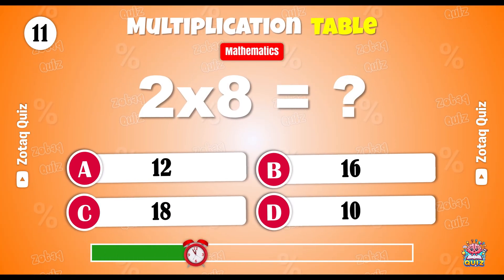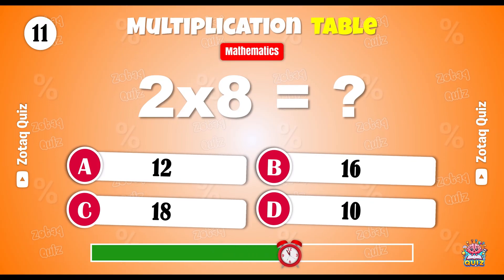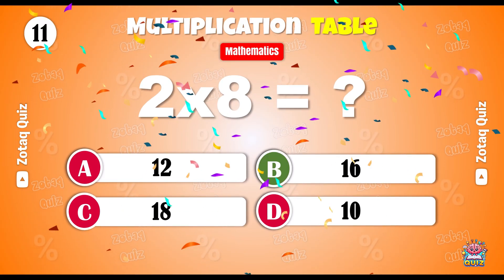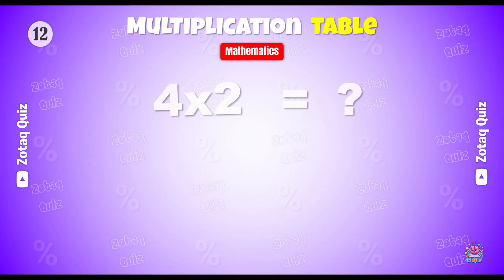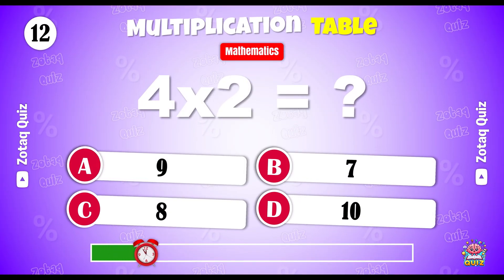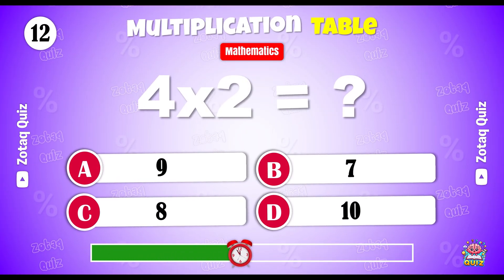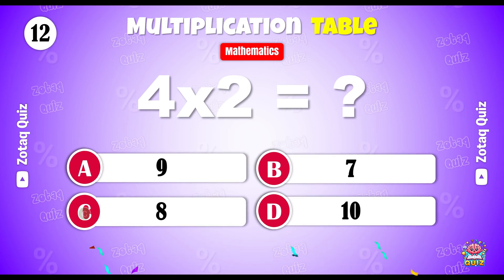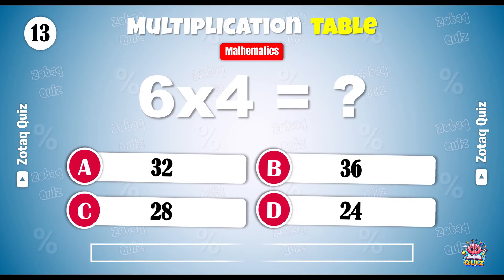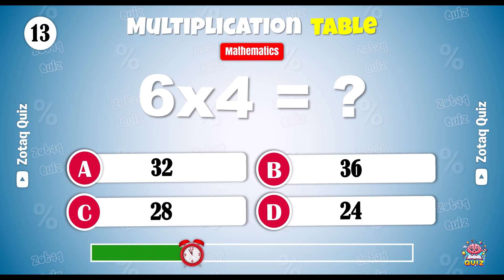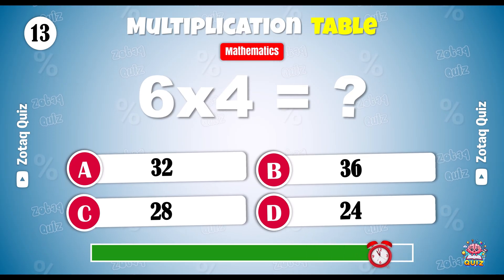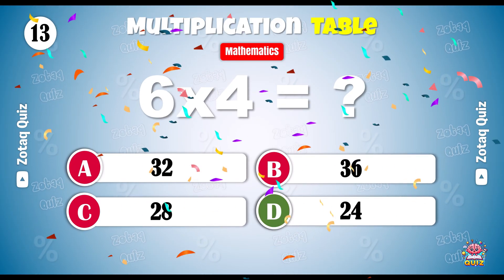Here is your next question. What is 2 x 8? 16 is the right answer. Solve this. 4 x 2 is equal to — 8 is the right answer. Now think fast. What do you get when you multiply 6 by 4? 24 is the right answer.